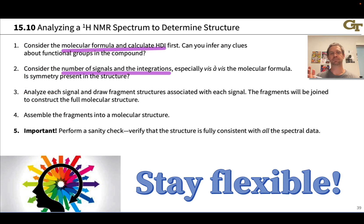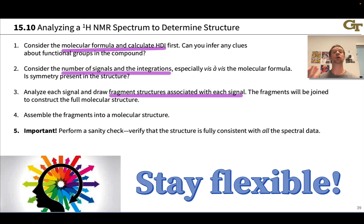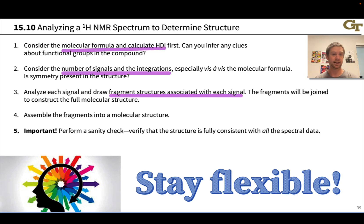Then analyze each signal and try to use coupling and splitting patterns to draw fragment structures associated with each signal or multiple signals. What we're going to do is join those fragments to construct the full molecular structure. The next step is to assemble that full molecular structure by joining the fragments — and here, coupling is key. You want to make sure that when you join fragments together, any coupling you introduce is accounted for in the splitting patterns in the proton NMR spectrum.